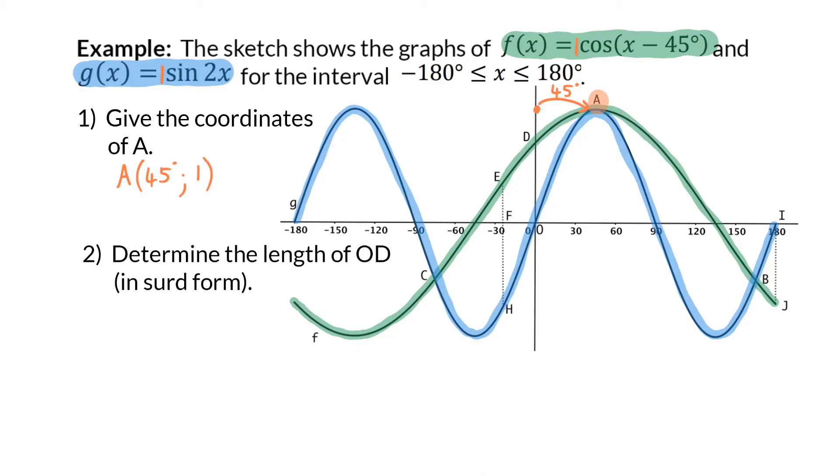Question 2: Determine the length of OD in surd form. OD is a vertical length, so to determine the length, we need the y-values of O as well as D. At O, the y-value is 0, therefore, if we can determine the y-value at D, we will also know the length of OD.